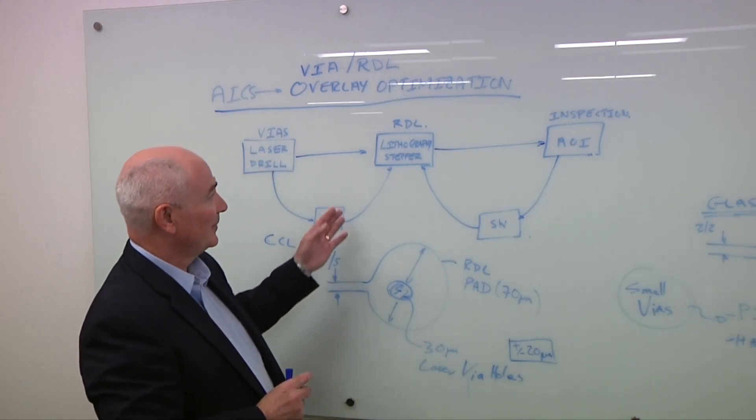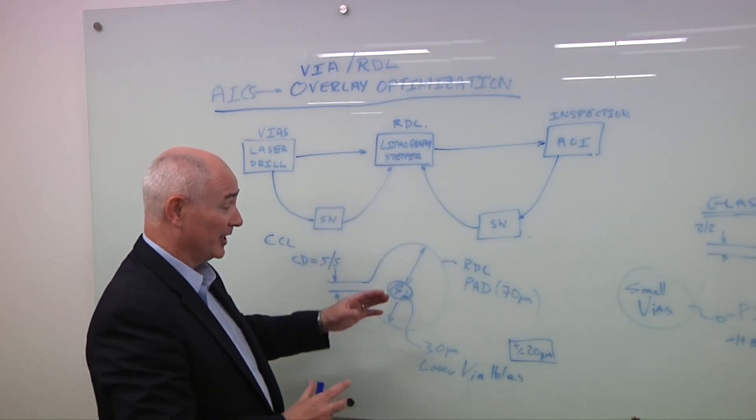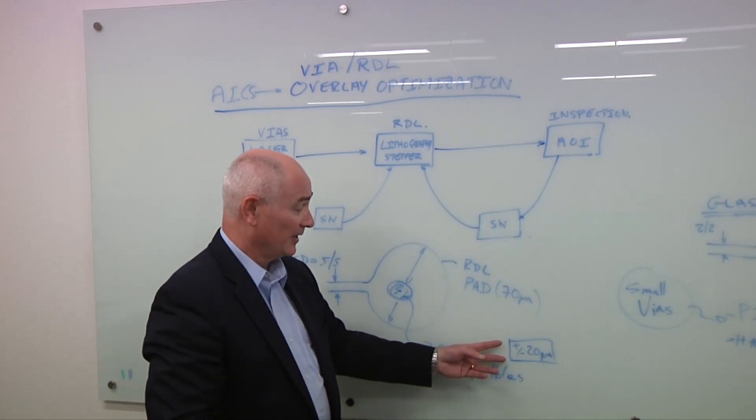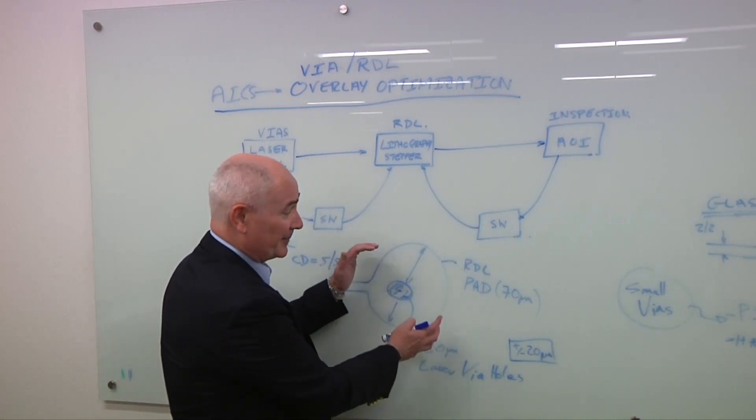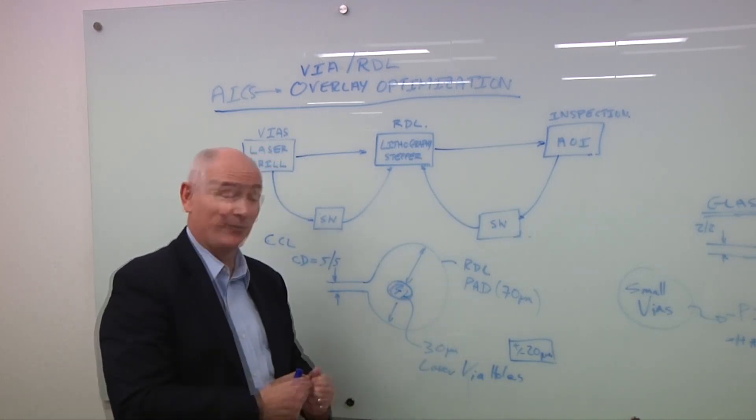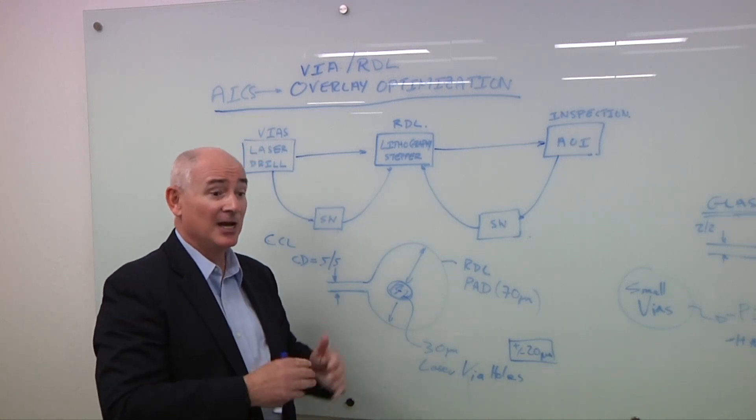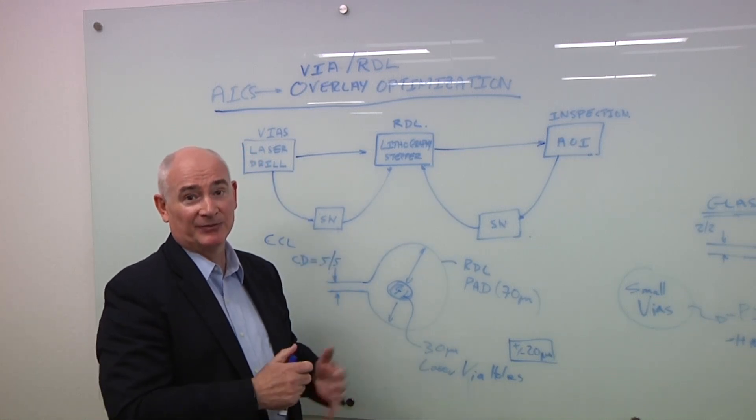So if we can get better overlay performance in this feedback or feedforward methodology, we can shrink the overlay tolerance and then reduce the size of this pad. If we can do that, we can squeeze more line spaces into the layer to reduce the number of layers. As a result, we'll reduce cost.